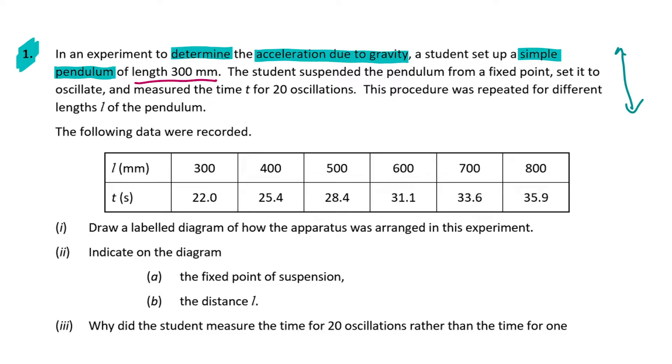The student suspended the pendulum from a fixed point, set it to oscillate, and measured the time t for 20 oscillations. This point is key and will really help us out, especially when we're drawing our graph. The procedure was repeated for different lengths l of the pendulum. So for every value of t you see in the second column, that is t for 20 oscillations, not one oscillation. This will become extremely important information when we're looking at part four.